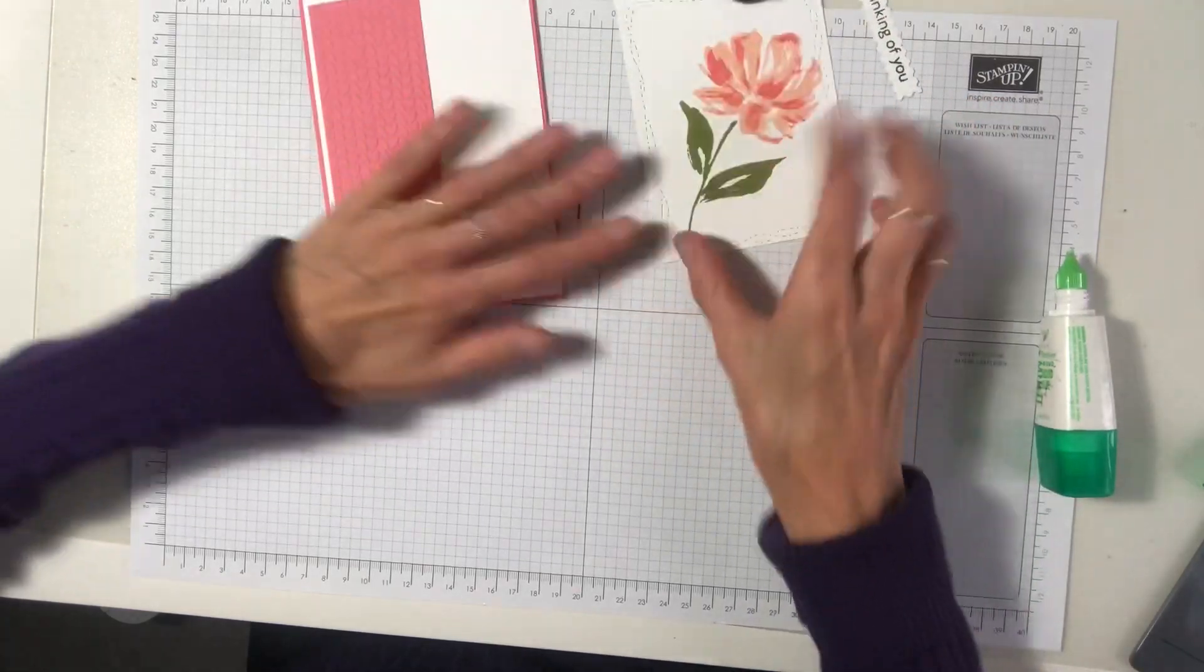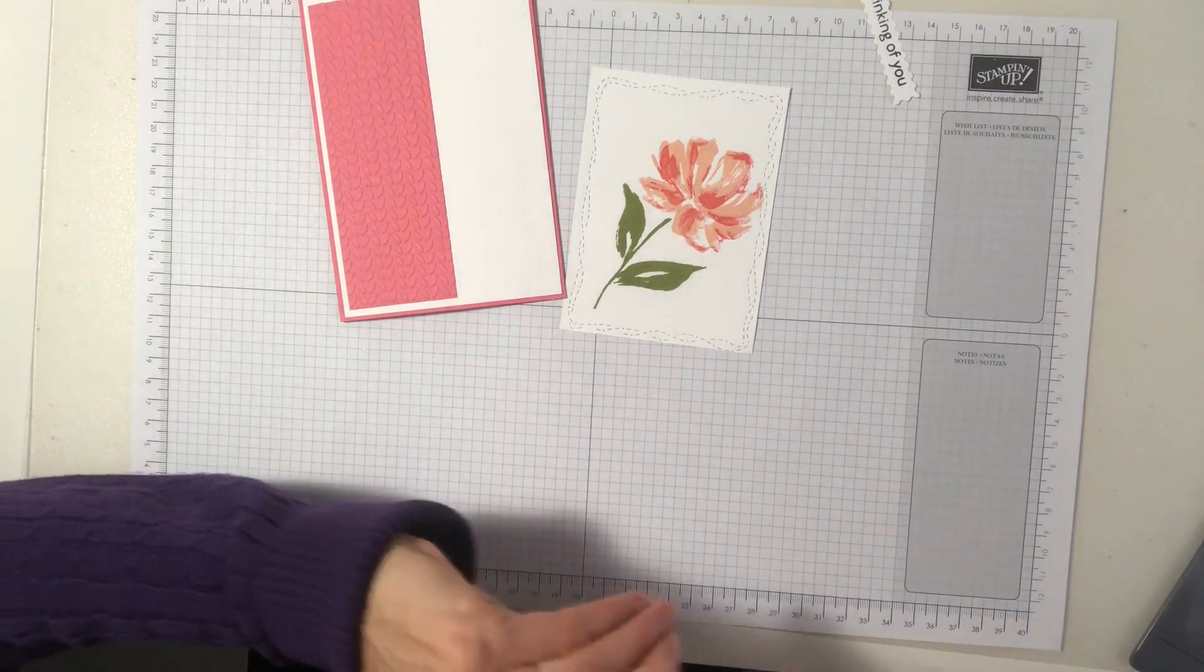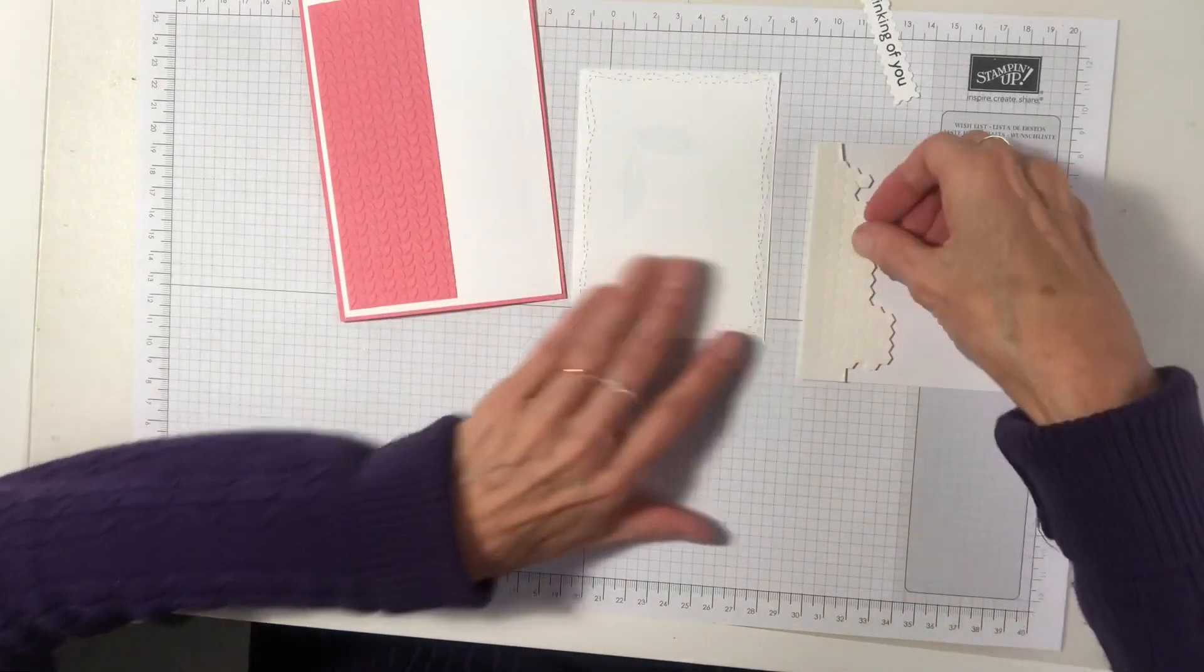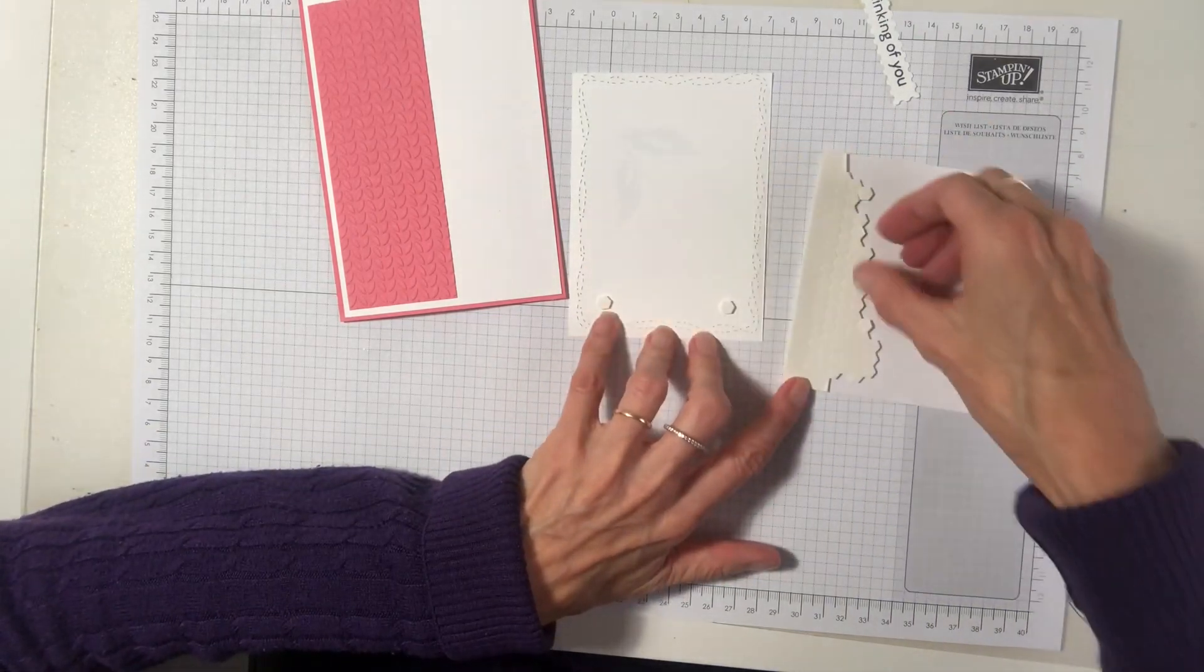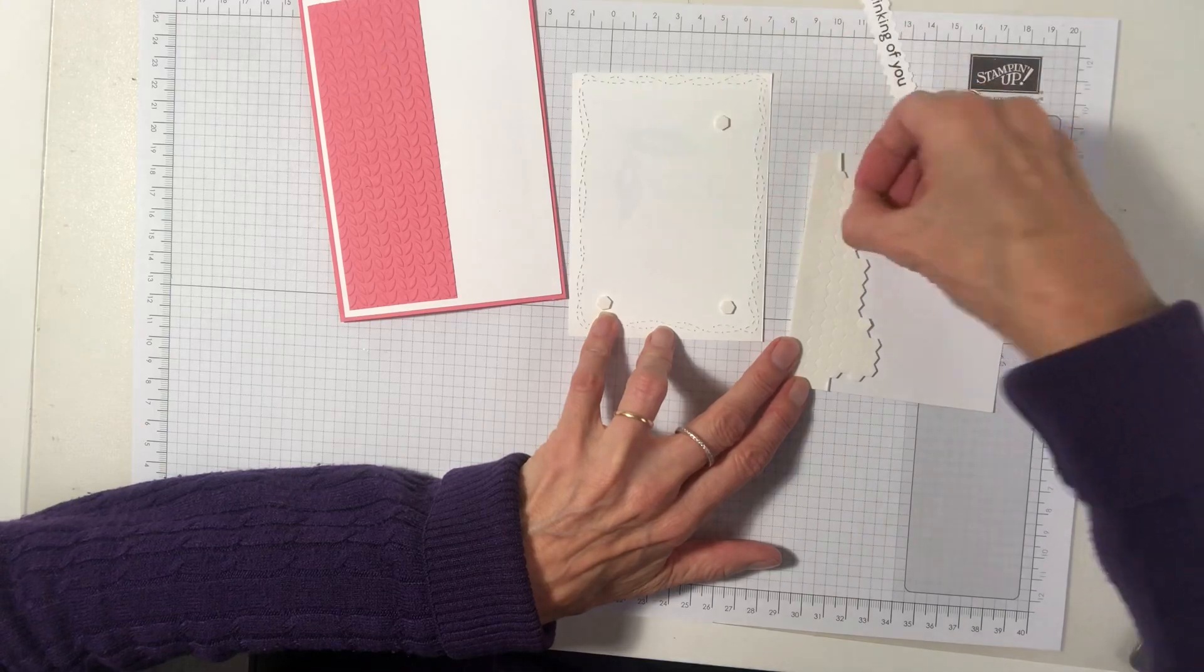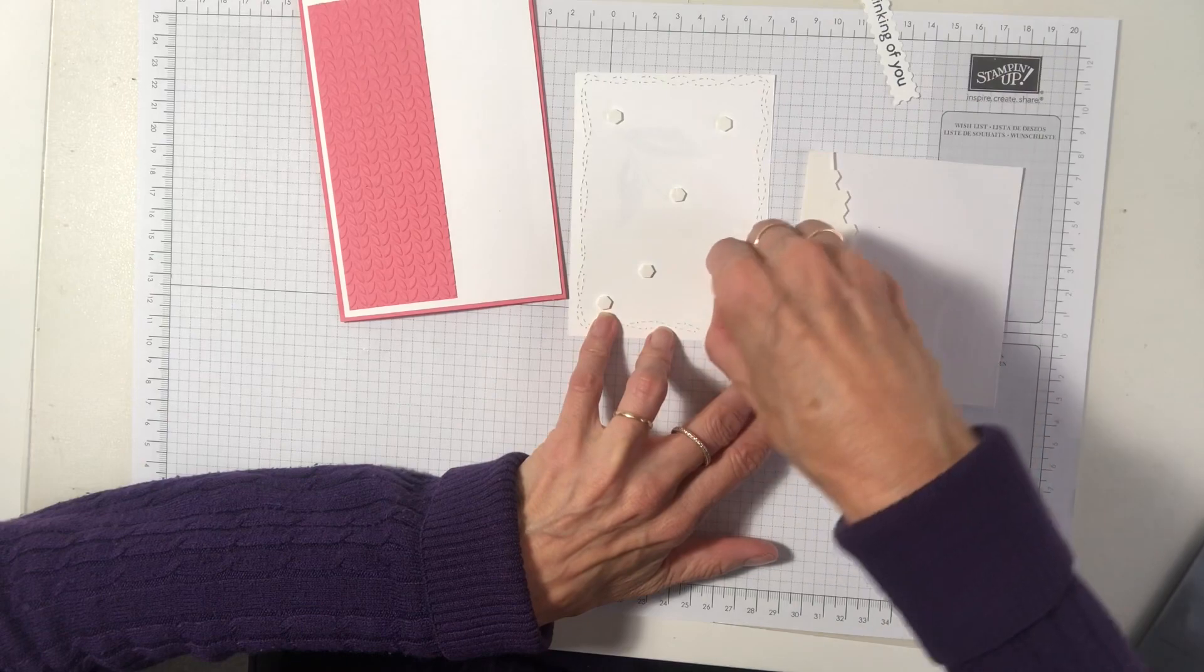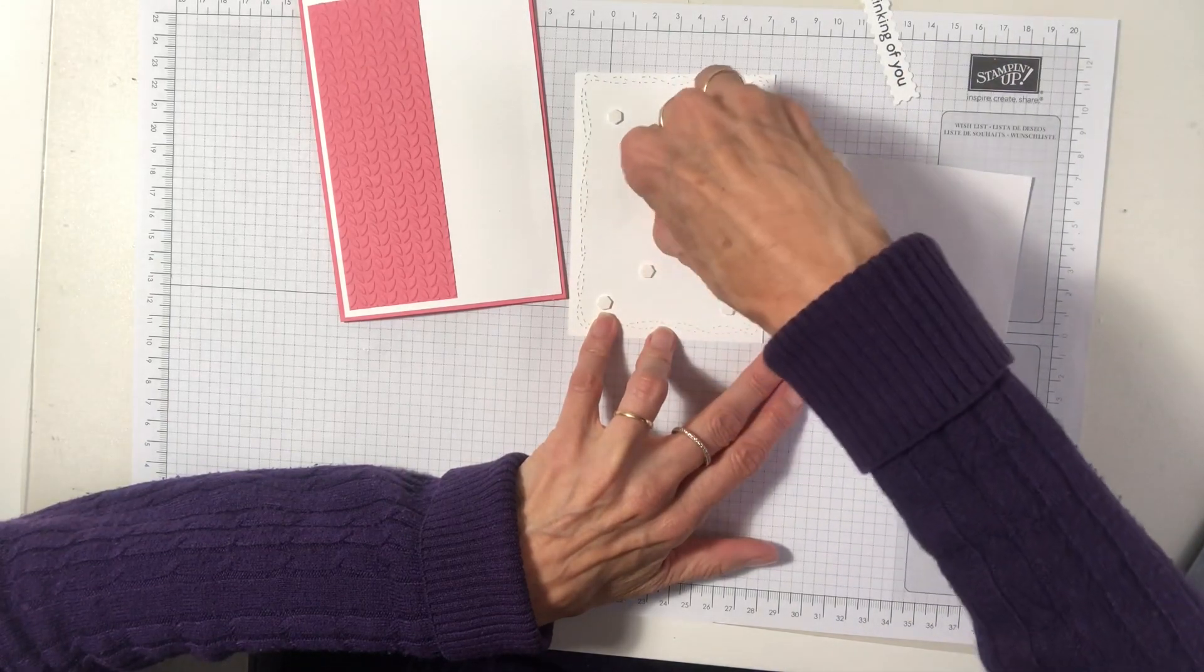Alright. Now, I want to raise the stamped piece up. So let's get our dimensionals. We'll just add a few around the edge of the card. I'm going to add a couple in the center too. Just to keep it level.